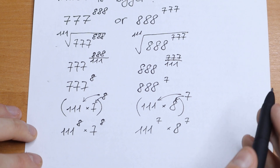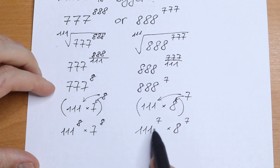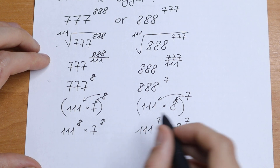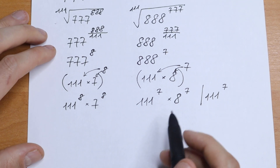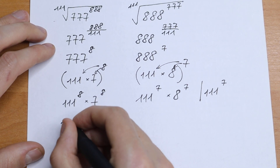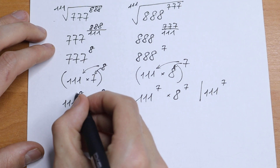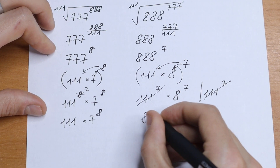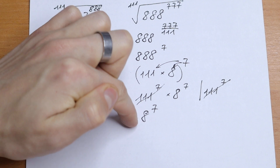We have 111 multiplied 8 times on the left and 7 times on the right, so we can cancel — divide both sides by 111 to the 7th power. What we get: on the left, 111 times 7 to the 8th power; on the right, after canceling, just 8 to the 7th power.